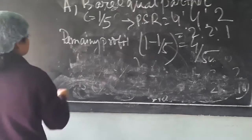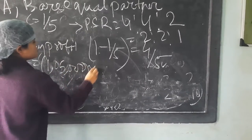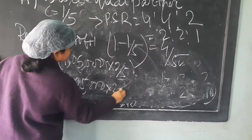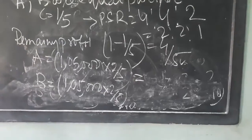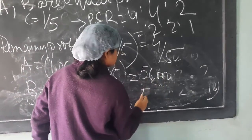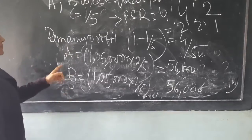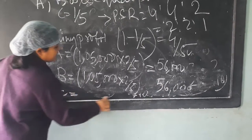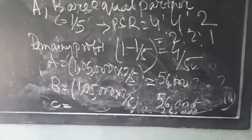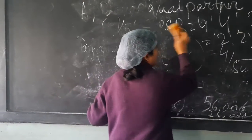A gets 1,40,000 multiplied by 2/5 = 56,000, and B similarly gets 56,000. The deficiency of 2,000 will be shared by A and B in equal ratio, since they are equal partners. So the final distribution of profit: A gets 56,000 minus 1,000 = 55,000. B gets 56,000 minus 1,000 = 55,000. C gets 28,000 plus 2,000 = 30,000.